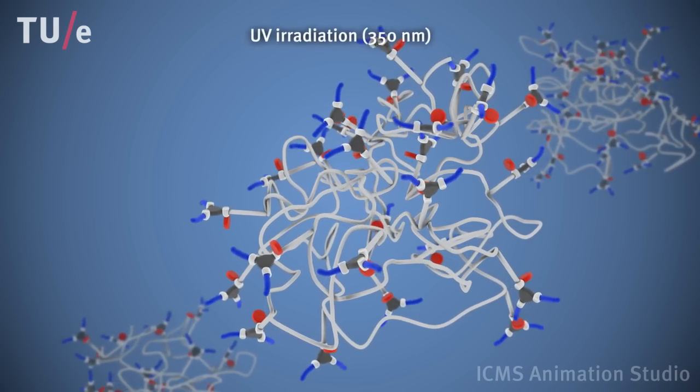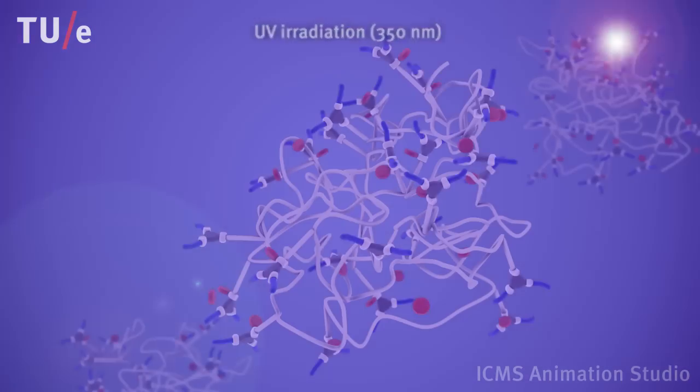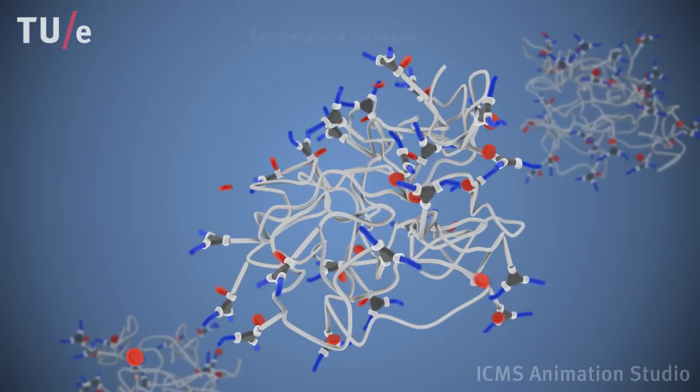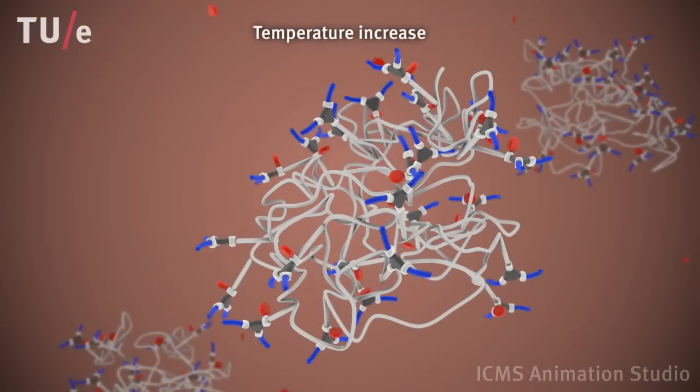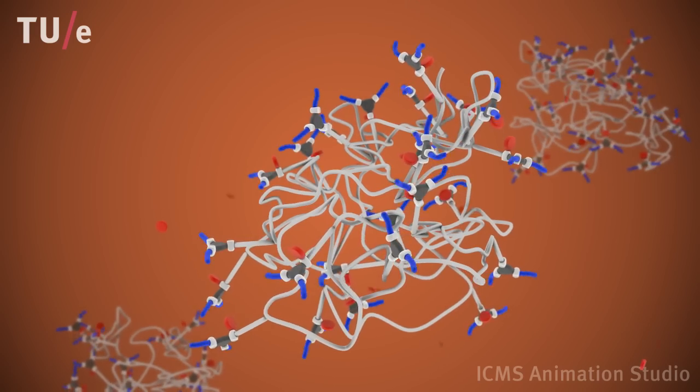Since the protecting groups prevent self-assembly of the BTAs, the polymer has a random coil conformation. The photolabile protecting groups are represented as red discs.